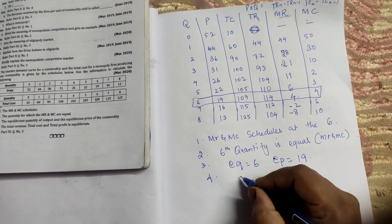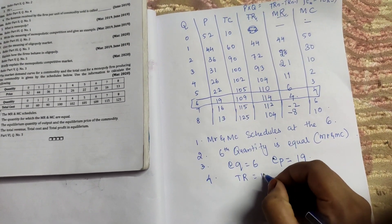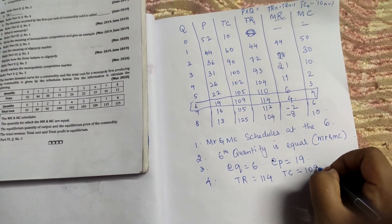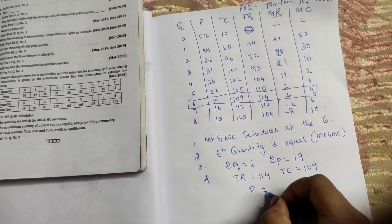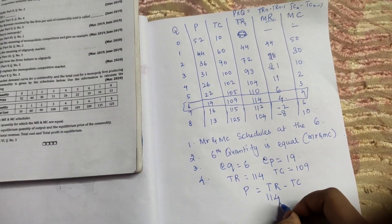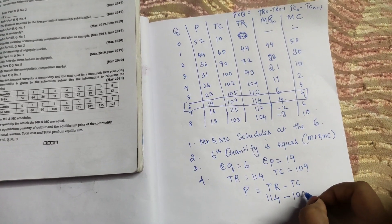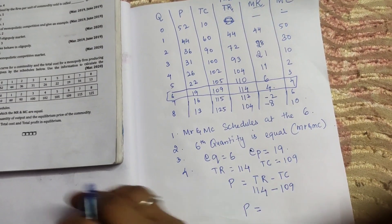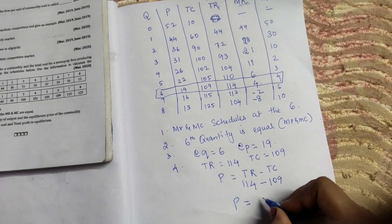So total revenue, total revenue is equals to 114. Total cost is equals to 109. To calculate profit we need to minus TR minus TC. So 114 is TR minus TC 109. Profit is equals to 5.